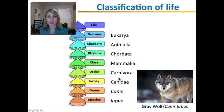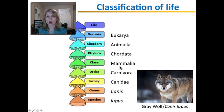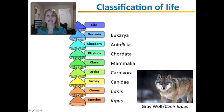The order Carnivora also includes cats, badgers, bears, raccoons, even walruses and seals. Then this order belongs to the class Mammalia, which includes all of these groups as well as other orders that include elephants and dolphins. Class belongs to a bigger phylum, phylum to the animal kingdom, and the animal kingdom belongs to the domain Eukarya.